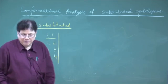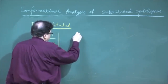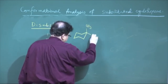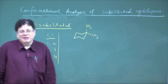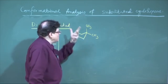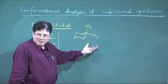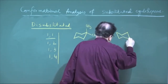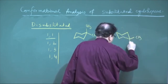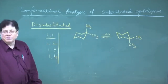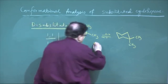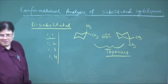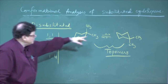The simplest case is 1,1-disubstitution where both substituents are at the same carbon — say both are methyls. In that case you have no choice: one methyl must be axial and the other equatorial. When you flip to the mirror-image chair form the molecule remains the same — one methyl is still axial and the other still equatorial. So there is no energy difference.